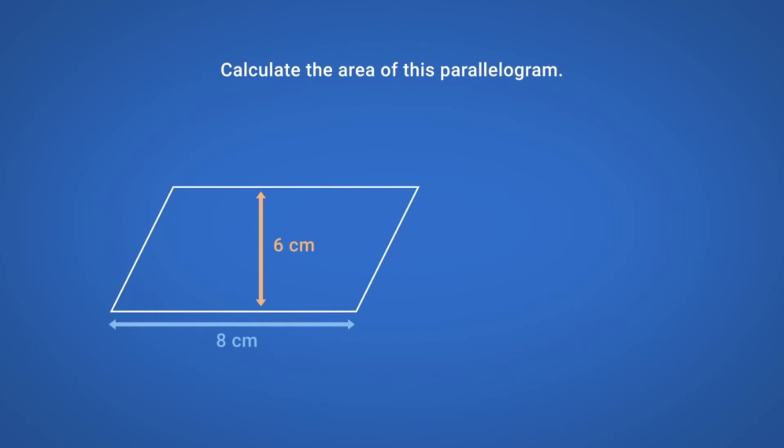Example. Calculate the area of this parallelogram. Using the formula A equals b multiplied by h, A equals 8 multiplied by 6, which equals 48. So, the area of this parallelogram is 48 cm squared.